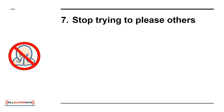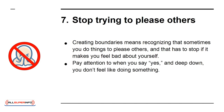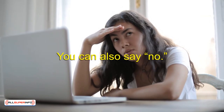7. Stop trying to please others. Creating boundaries means recognizing that sometimes you do things to please others, and that has to stop if it makes you feel bad about yourself. Pay attention to when you say yes, and deep down, you don't feel like doing something. Take the courage to stop trying to please others. For example, if somebody asks you to do something for them and you don't feel it's aligned with your needs, just say that it's not a good time for you. You can also say no.